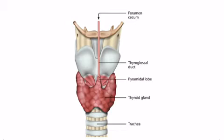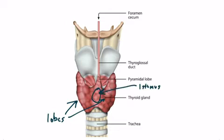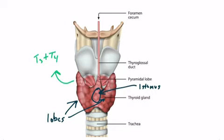Here's what the thyroid should look like in the end. It has two lobes, and in the middle there's an isthmus. The thyroid gland is responsible for releasing thyroid hormone, or T3 and T4. The thyroid sits just anterior to the trachea, but the cells that end up becoming the thyroid gland actually originate somewhere else. Let's talk about how it develops and travels.